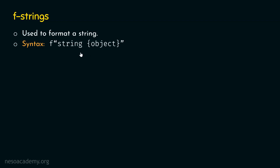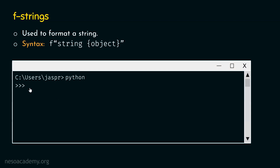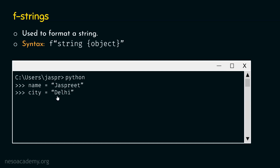In order to see f-strings in action, we need to open our command prompt and activate the Python interactive shell. Let's type name equal to Jaspreet and hit enter. Then type city equal to Delhi. Now let's type f, my name is name and I live in city. In this way, we can format this entire string using f-string.